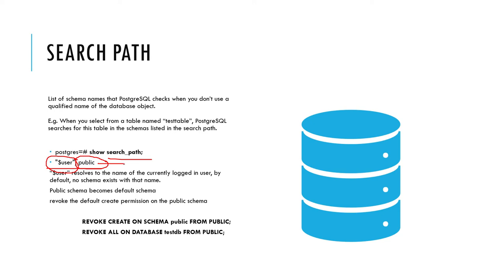Instead of writing SELECT * FROM public.actor, you simply say SELECT * FROM actor and PostgreSQL will search the public schema. If you have a schema named 'postgres' and your object is there, it will look into that and display the result. This search path value can be changed so that by default it looks into a specific schema.